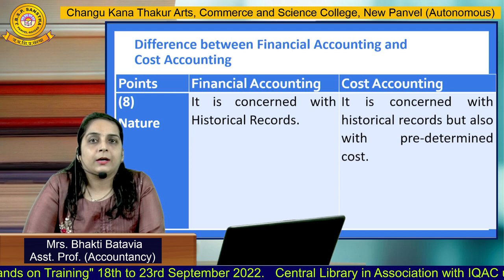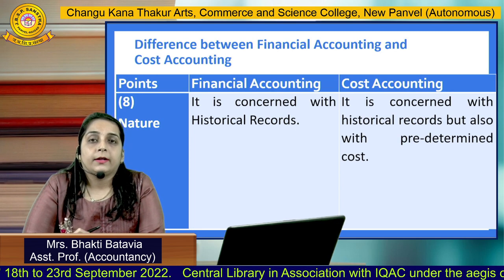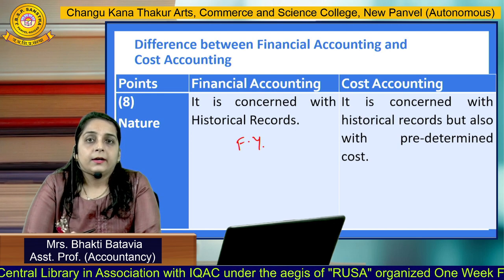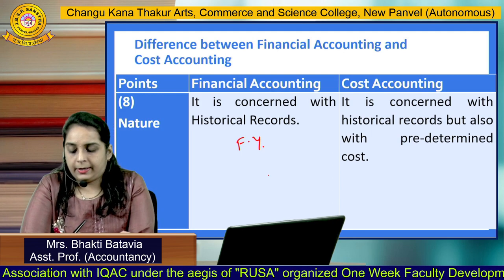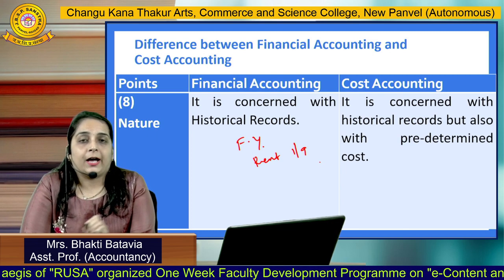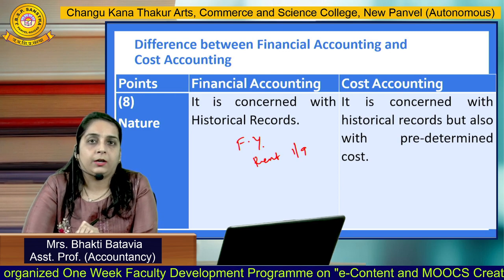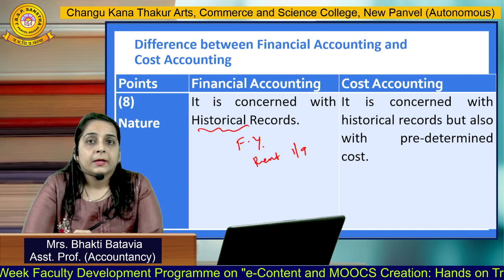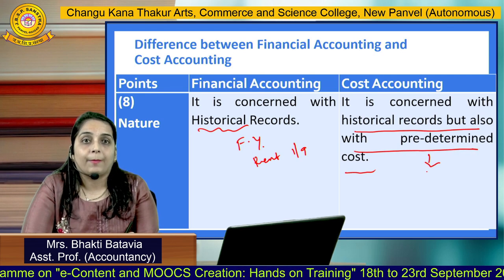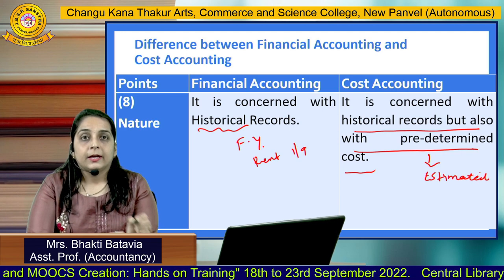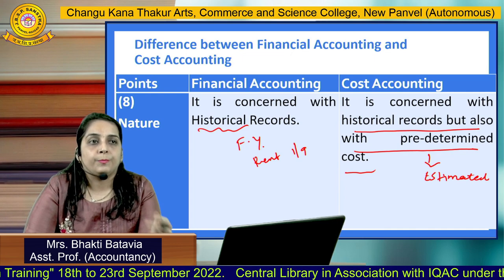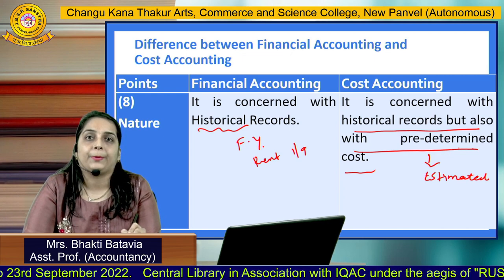The final comparison is the nature. Financial Accounting is concerned with historical records, because we record past transactions — for example, rent paid on 1st September is recorded when preparing the financial statement in February or March. But Cost Accounting is concerned with both historical records and predetermined cost — that is, estimated cost. We estimate how the cost can be, how it will be, and what it should be.